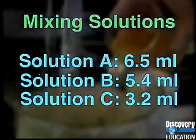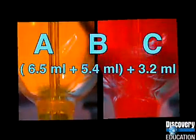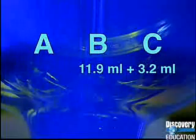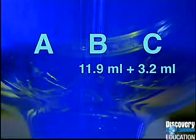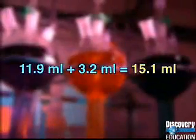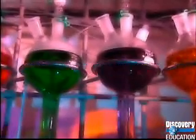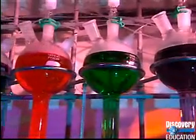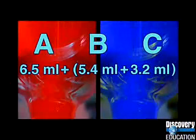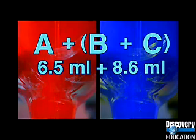Let's see. He could first combine solutions A and B, mix them together to get 11.9 milliliters, then add the 3.2 milliliters of solution C. The total amount? 15.1 milliliters. Now, say he decides to combine solutions B and C separately, and add that combination to A. The combination of B and C is 8.6 milliliters.